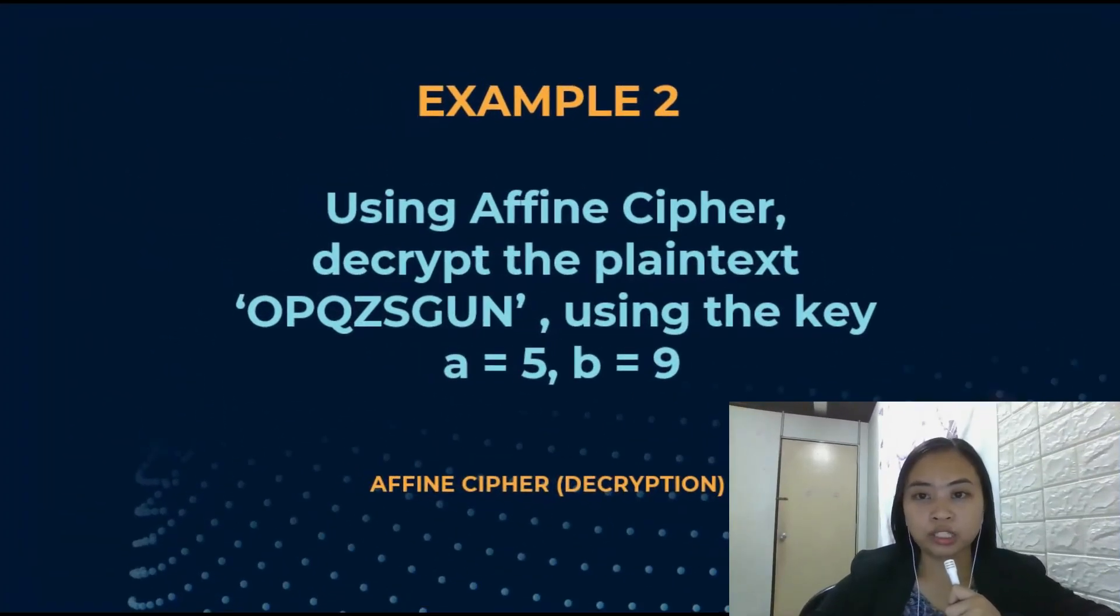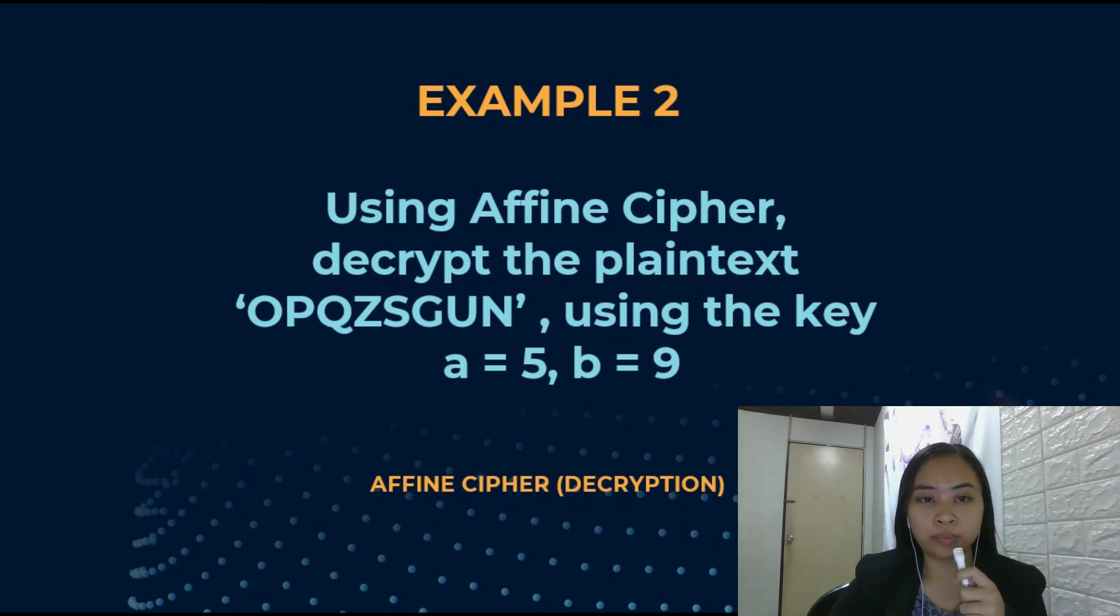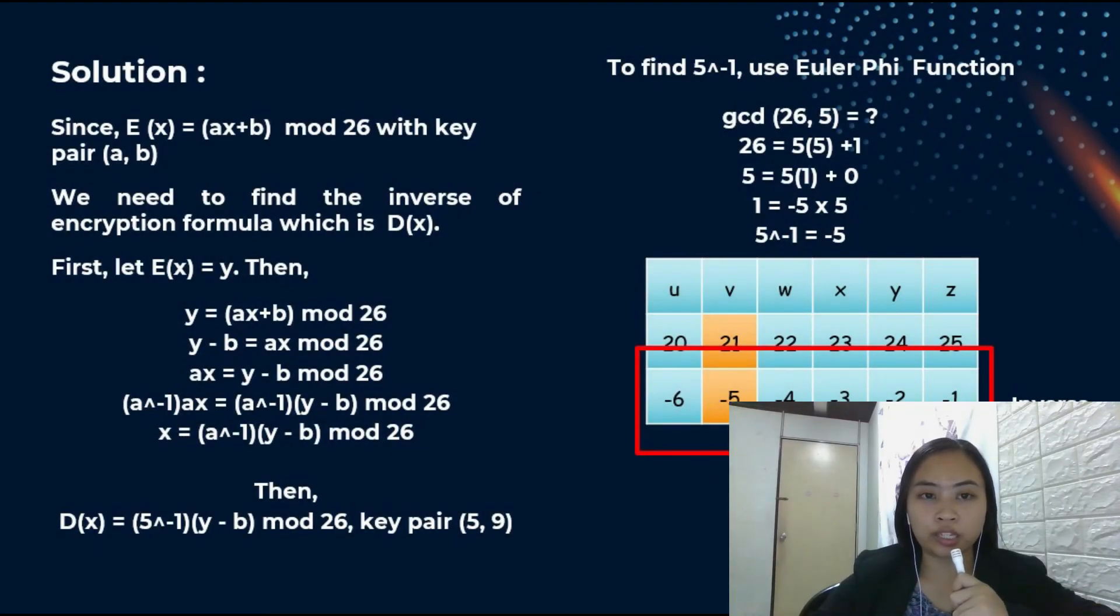The second example is about decryption in affine cipher. The question is, using affine cipher, decrypt the plaintext O P Q Z S G U N using the key A equals 5 and B equals 9. The solution is, since E(X) equals to AX plus B mod 26 with key pair AB, we need to find the inverse of encryption formula which is D(X). First, let E(X) equals to Y. Then, Y equals to AX plus B mod 26. Y minus B equals to AX mod 26. AX equals to Y minus B mod 26. Then, we get D(X) equals to 5 inverse times (Y minus 9) mod 26 with key pair (5, 9).